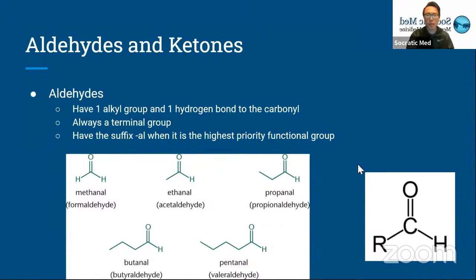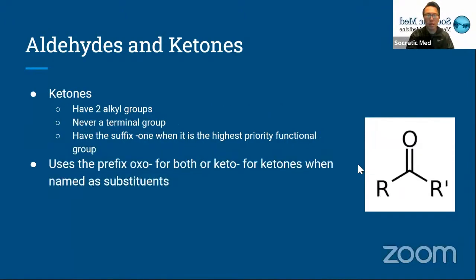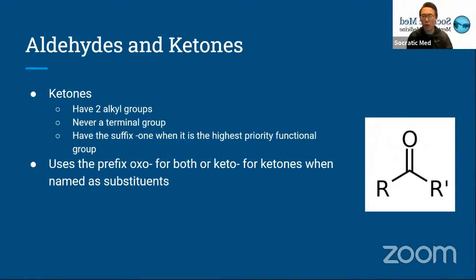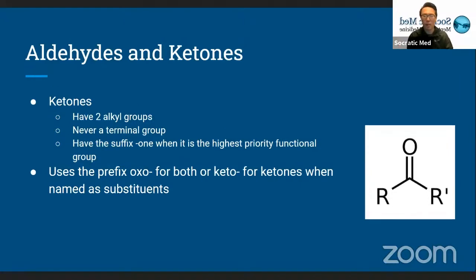That's aldehydes. Ketones are similar to aldehydes, except they have two alkyl groups bonded to them instead of just one. Since they have two alkyl groups bonded to them, they're never a terminal group — you'll always find them at the center of a molecule. When it's the highest priority functional group, you'll see the suffix ONE at the end in the IUPAC name.